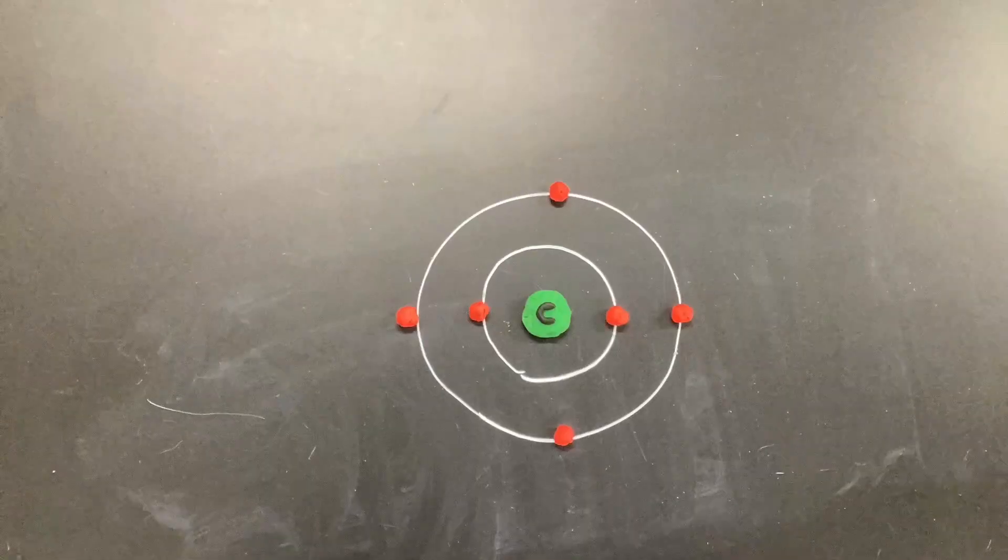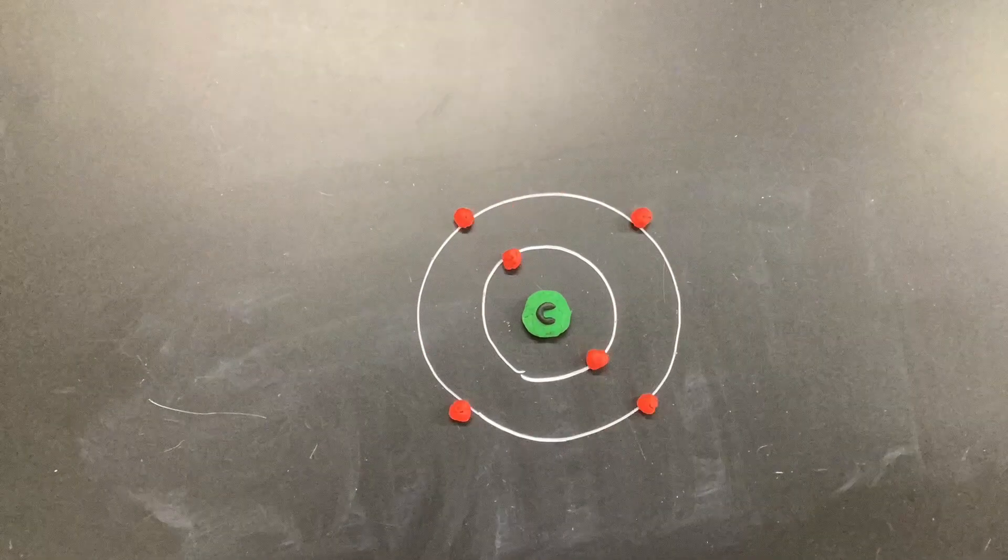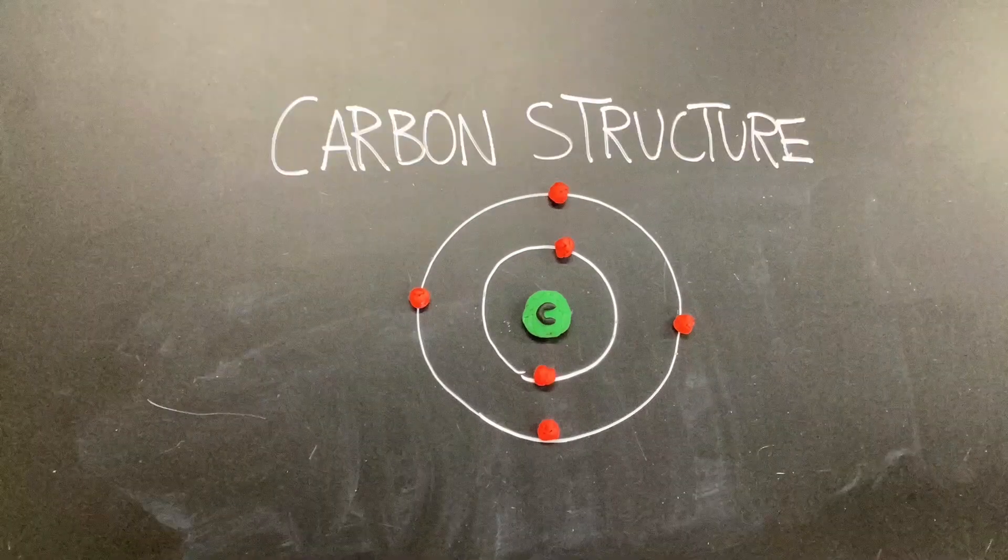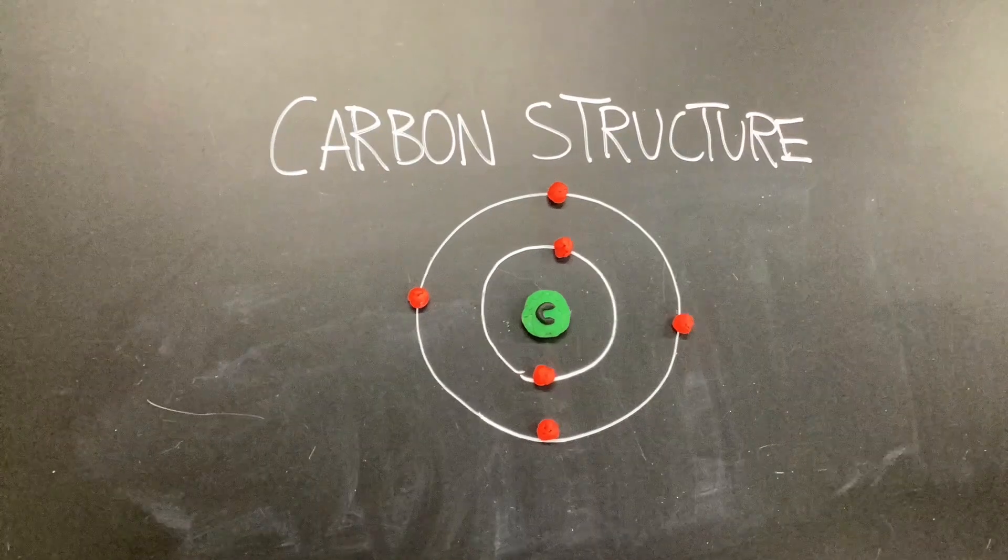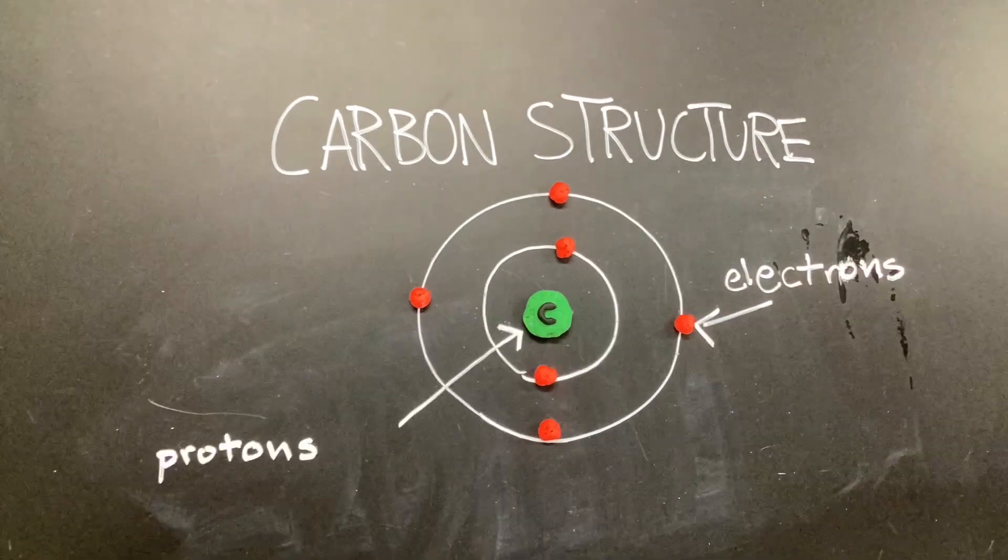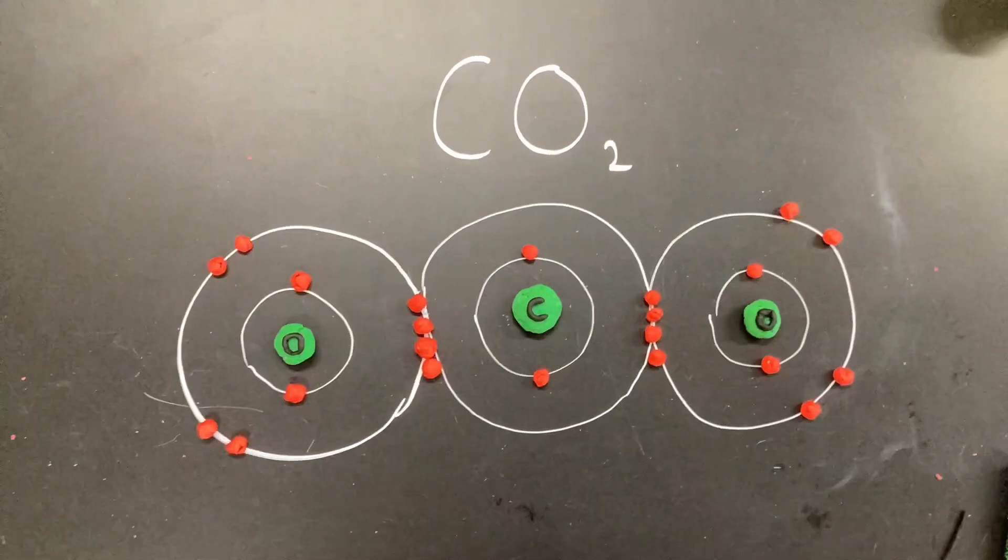Before we begin the story of the life of carbon, it is important to understand the structure of carbon. A carbon molecule is made up of six atoms and is able to form covalent bonds with other molecules due to its four-electron outer shell. An example of this is carbon dioxide.